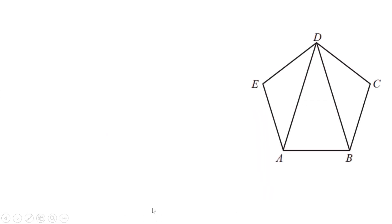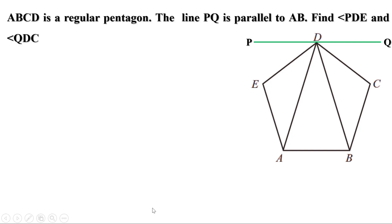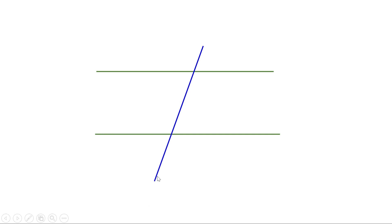Another problem using the same figure. ABCDE is a regular pentagon and the line PQ is parallel to AB. Find angle PDE and angle QDC. Consider two parallel lines intersected by a transversal — the two alternate angles formed are equal.